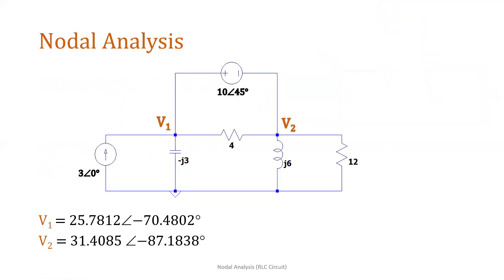As a summary, the resulting nodal voltages are: V1 = 25.7812∠−70.4802° and V2 = 31.4085∠−87.1838°. That's it.